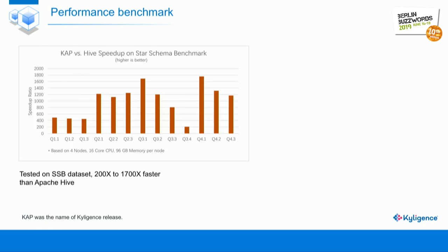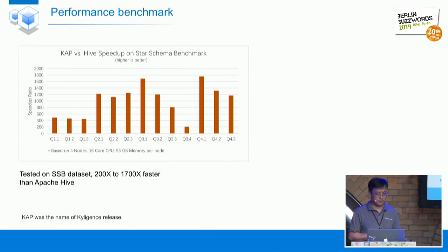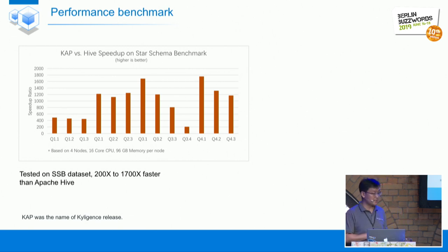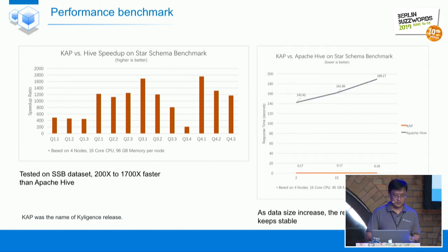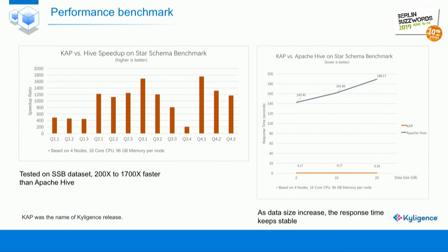We did a performance benchmark comparing Kylin with Hive using the star schema benchmark. This diagram shows how much improvement is achieved when switching to Apache Kylin. For each query, at least a 200x improvement is observed. The biggest speedup is more than 1000x. This may seem unfair because most computation has already been done in Kylin, but the user experience is very different. Another diagram shows that as data increases, Kylin's latency remains very stable, while Hive's latency increases as data grows.